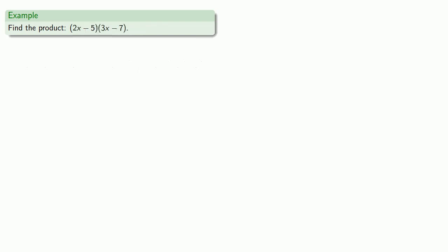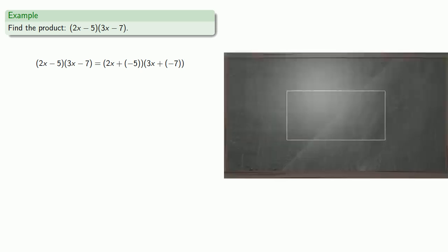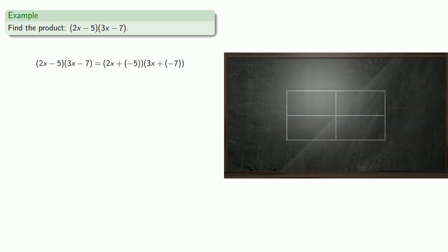What if one or both of our factors involve a subtraction? Well here it's useful to remember that any subtraction is the same as adding the additive inverse. So we can rewrite this as 2x plus additive inverse 5 times 3x plus additive inverse 7. And so once again each factor is a sum, and so when we draw our picture, we can split the sides of the rectangle into parts that correspond to each term of the sum. So the one side corresponds to the first factor, 2x and negative 5, and the other side corresponds to our other factor, 3x and negative 7.